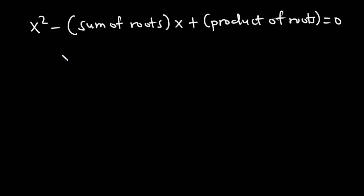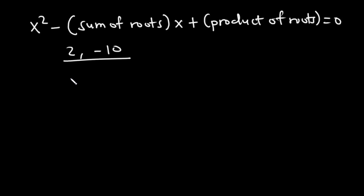The sum of roots means that you want to add the roots, and the product means that you want to multiply the roots. So if the roots of a quadratic equation are 2 and negative 10, how do we generate the quadratic equation?